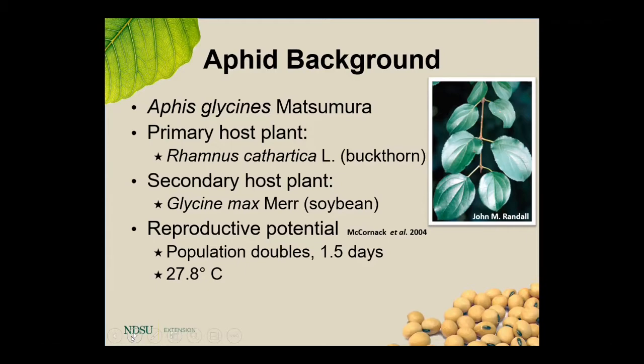Throughout the soybean belt, soybean aphid is considered one of the most injurious insects to soybean, and that really has to do with its reproductive potential. A population can double in about a day and a half under idealistic conditions — around 72 to 75 degrees Fahrenheit and relatively moderate humidities around 60 to 70 percent. That day-and-a-half doubling time can really lead to explosive population growth.